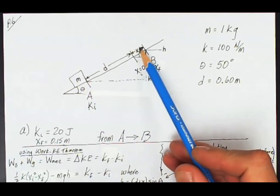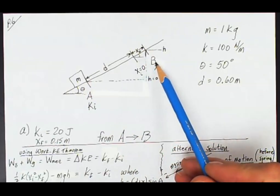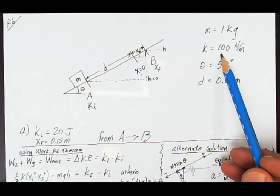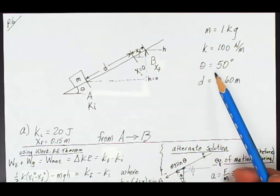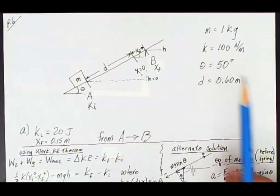And it will compress the spring to a distance of 15 centimeters, which we'll label xf. And now the block will be at height h above our reference point, h equals zero, when the block was at position A. Up here, when the spring is compressed 15 centimeters, that is position B. The spring constant is 100 newtons per meter, and the angle of the ramp is 50 degrees.